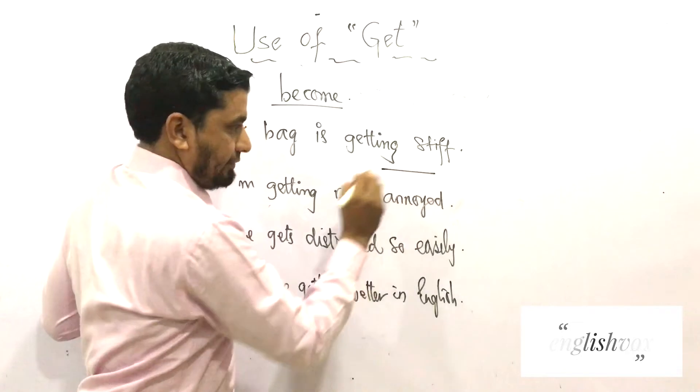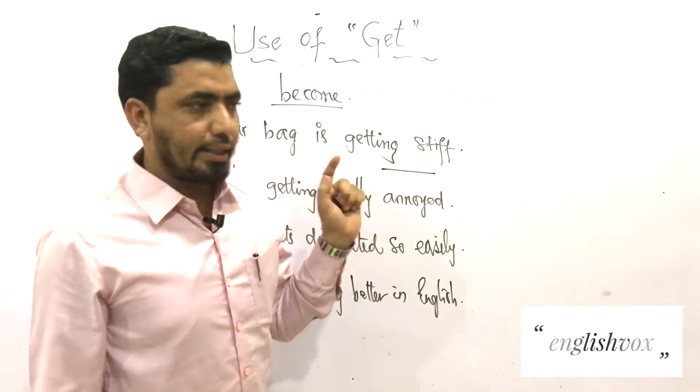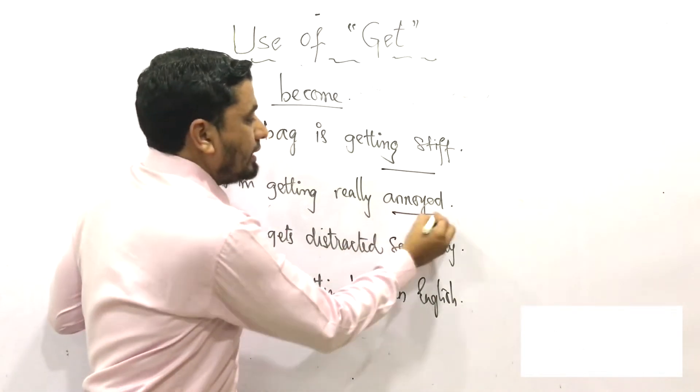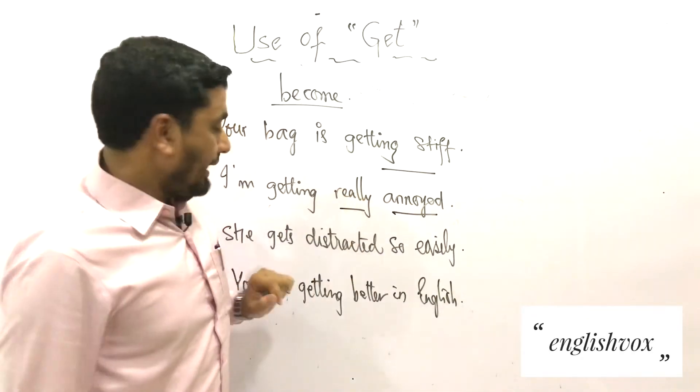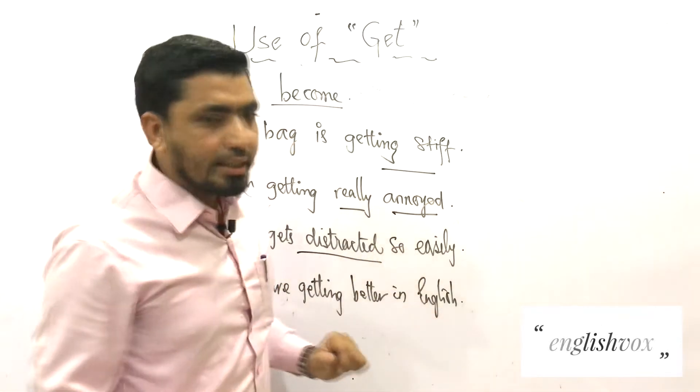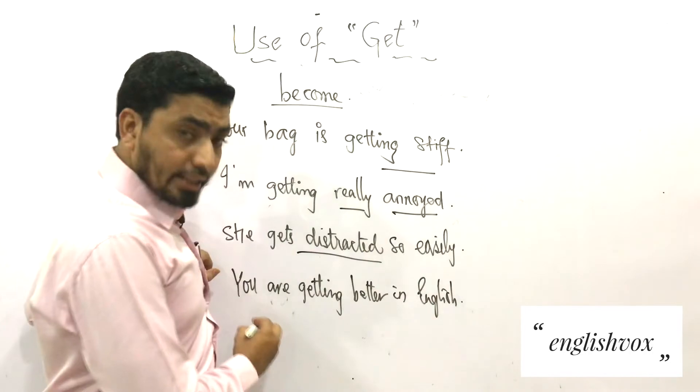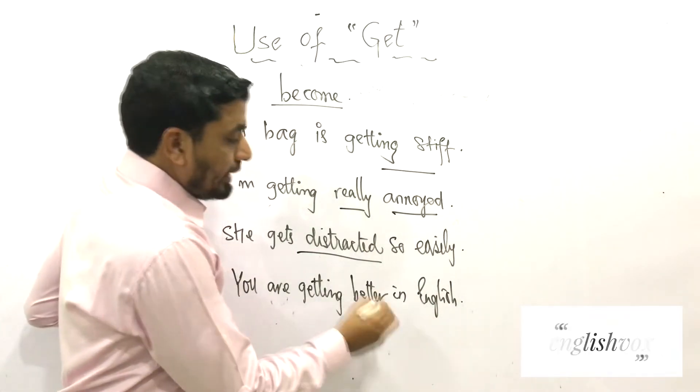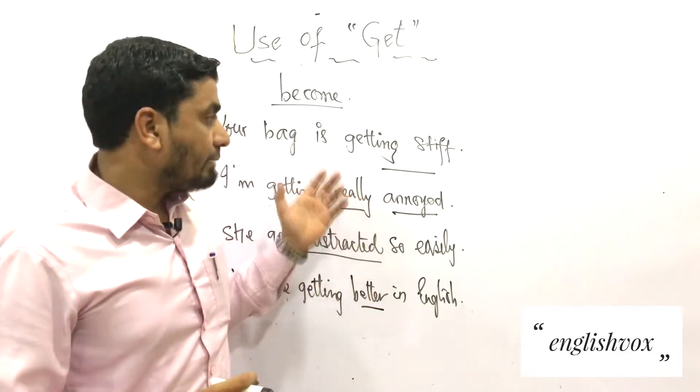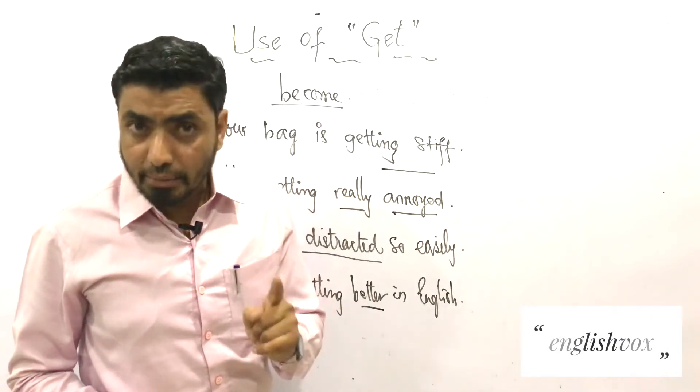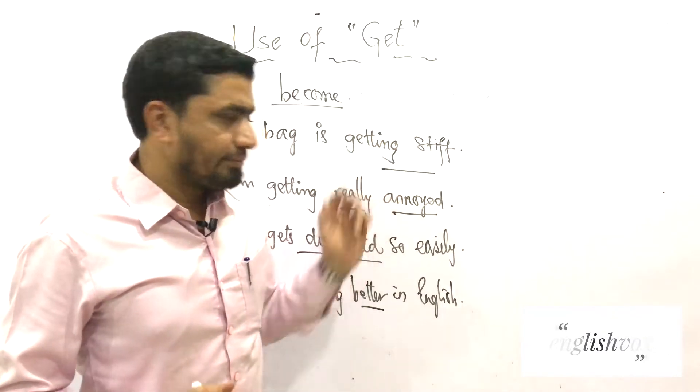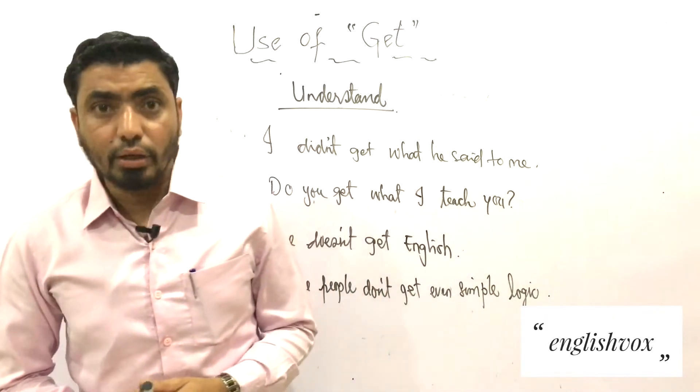'Your bag is getting stiff' - so 'stiff' is an adjective here. Another example: 'I am getting really annoyed'. The third example is 'She gets distracted so easily', and the last example says 'You are getting better in English'. In all these examples, 'get' is giving the meaning of 'become'. But remember, whenever it gives the meaning of 'become', it is followed by an adjective.